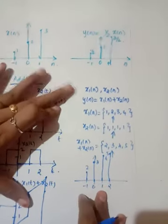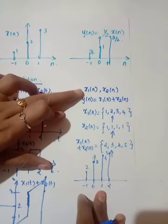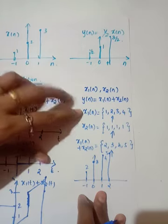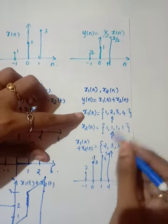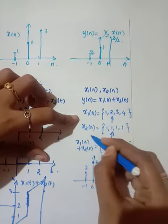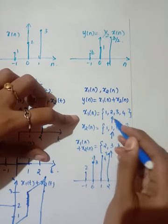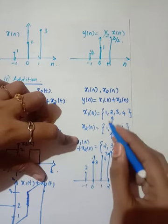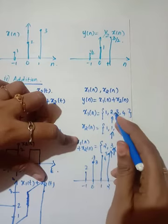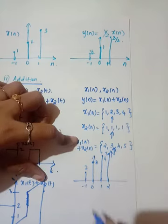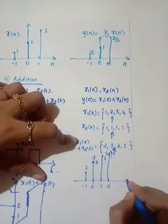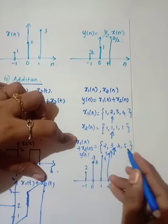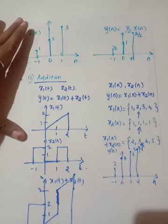Now consider two discrete time sequences: x1(n) = {1, 2, 3, 4} and x2(n) = {1, 1, 1}, where the origin is marked. y(n) = x1(n) + x2(n). Just adding the corresponding amplitudes, I have plotted the resulting sequence y(n) = {2, 3, 4, 5}. It is a very simple addition.